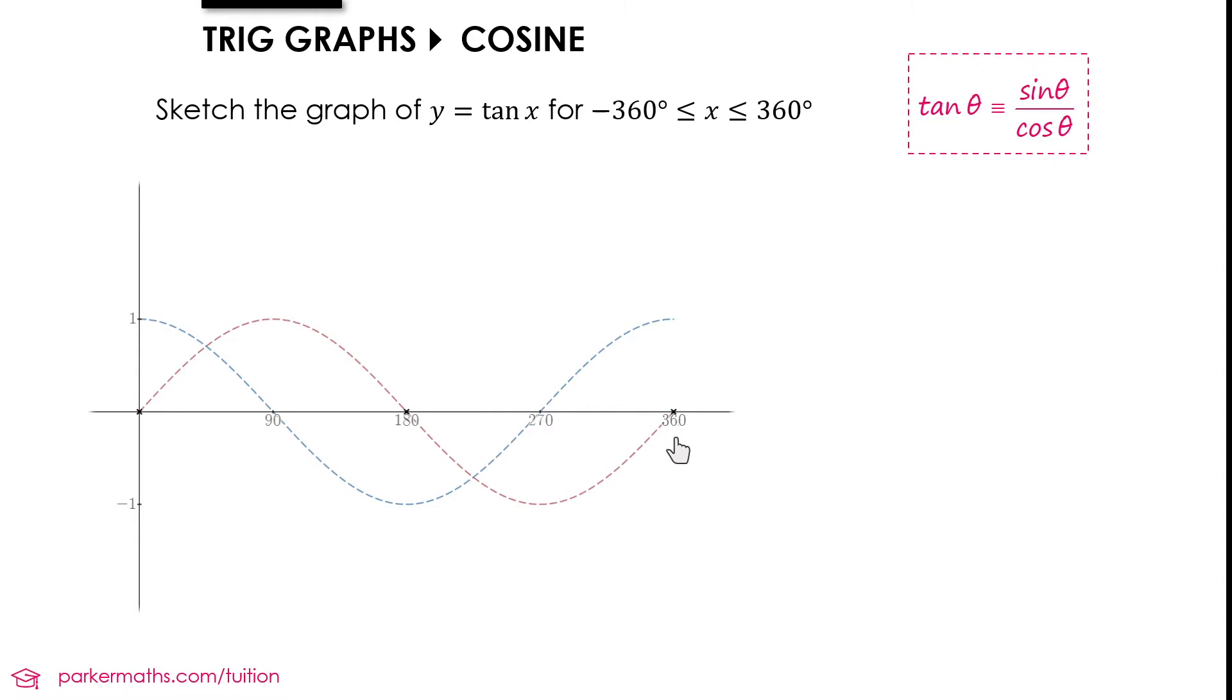Next, let's think about what happens at 90 and 270. At 90, cos x equals zero, so the calculation would be one divided by zero. We can't do one divided by zero - it's undefined. The same thing happens at 270, we'd be doing minus one divided by zero.